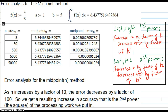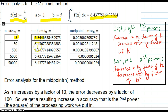Error analysis for the midpoint method. We use our function over the interval we've been using, and the actual integral equals this number. The midpoint values for an n size of 5 are not too bad, a little bit off. By the time you get to 500, 6.4377 matches up pretty well. So it's a pretty good method.